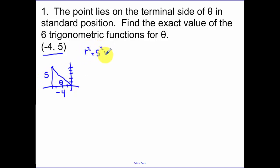To find our radius, we do our Pythagorean theorem. So r squared equals 5 squared plus negative 4 squared. So r squared equals 25 plus 16. So r squared equals 41. So r in this case is the square root of 41.